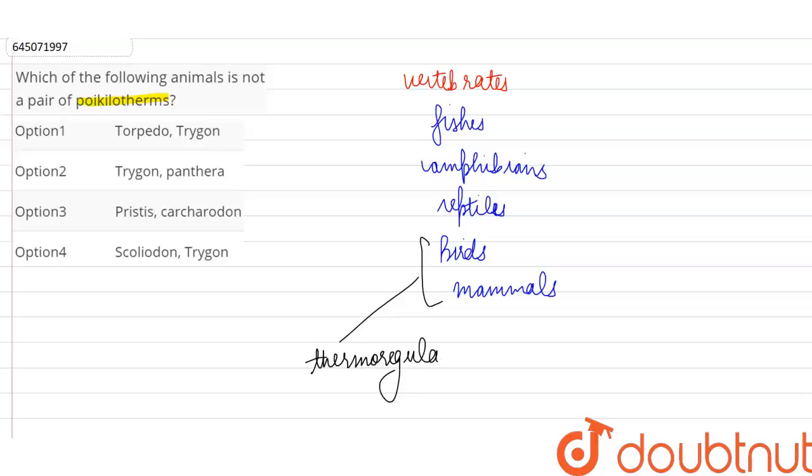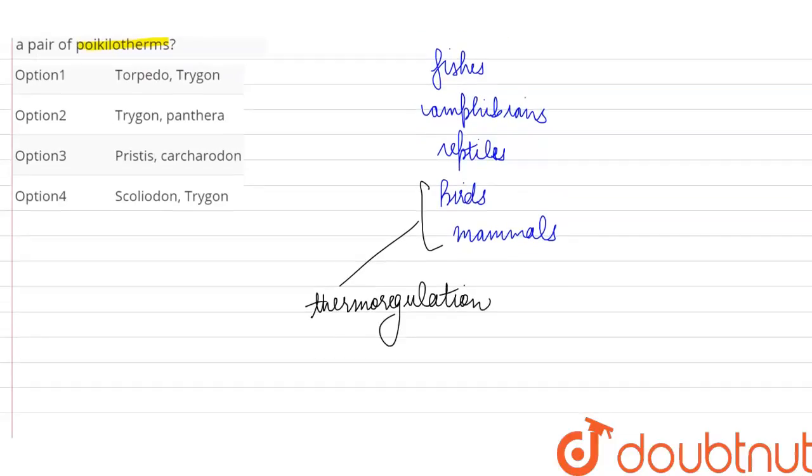Thermoregulation means that even if the ambient temperature, even if the temperature in their surroundings keeps changing, their body temperature will remain constant.